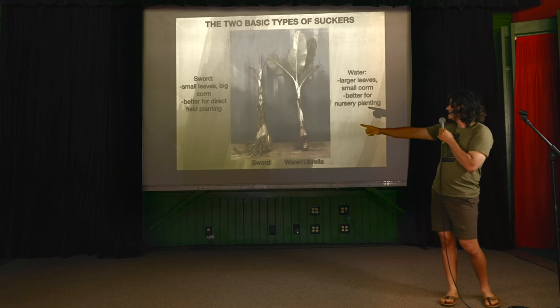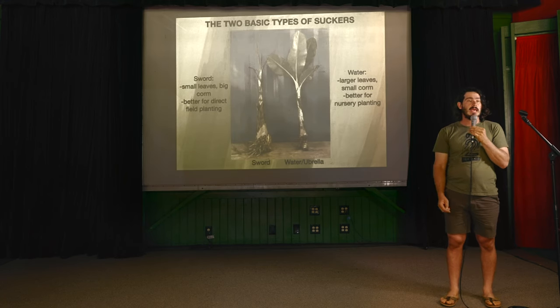Water suckers are actually really good for planting in the nursery — any little bit of a banana plant can work if you can get it rooted. I actually have a whole propagation system based on artificially getting the plant to produce water suckers. I would love to share all of that today, but it's a whole other hour — I'm actually doing that November 6th in Kona at the Hawaii Tropical Fruit Growers Conference, where I'll do a deep dive into banana propagation.